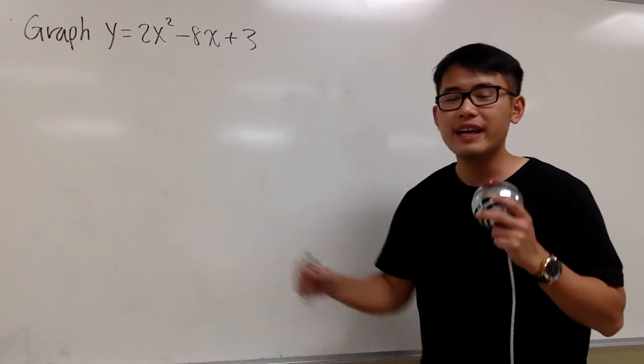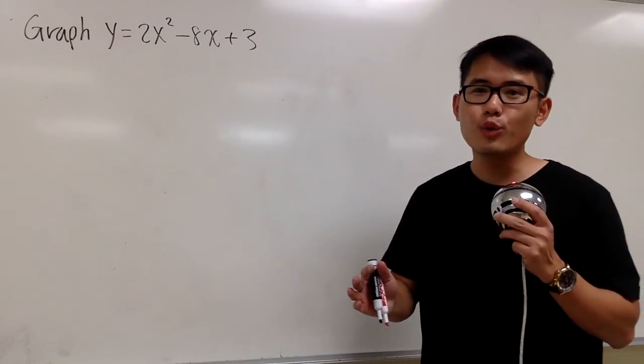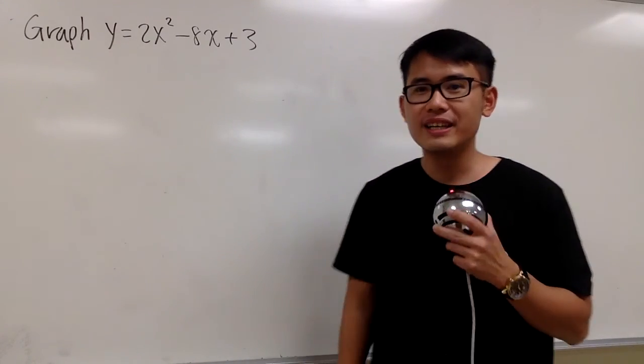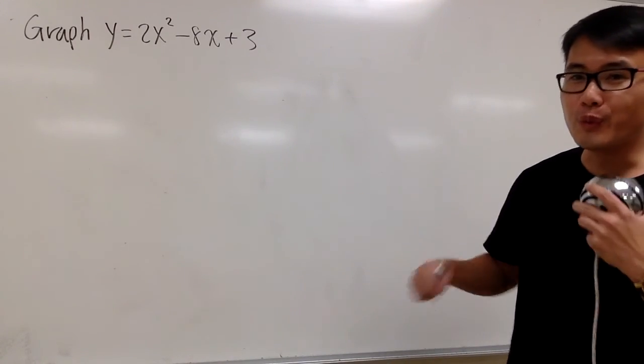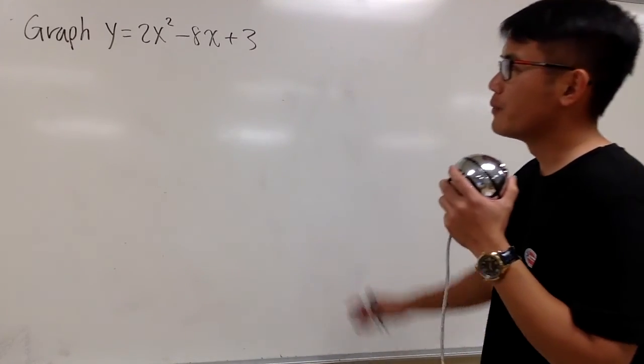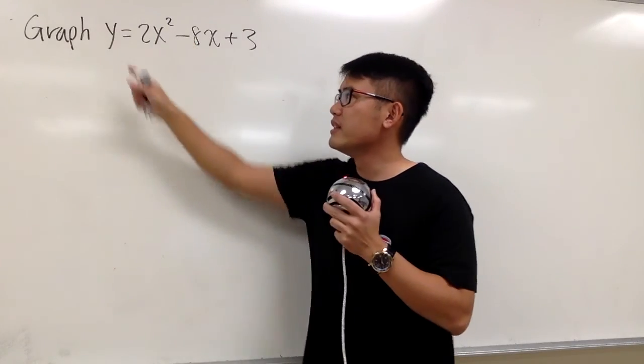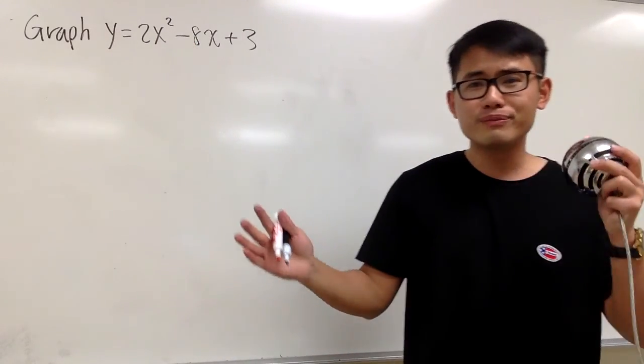Alright, we are going to graph this equation, and in this case we are going to have a detail graph, and we are going to use a table with 5 points. So it's not just a quick sketch, we will provide all the details. So, this is the parabola, right? Because you see the x squared and then the x, and the y is by itself, so let's get to work.